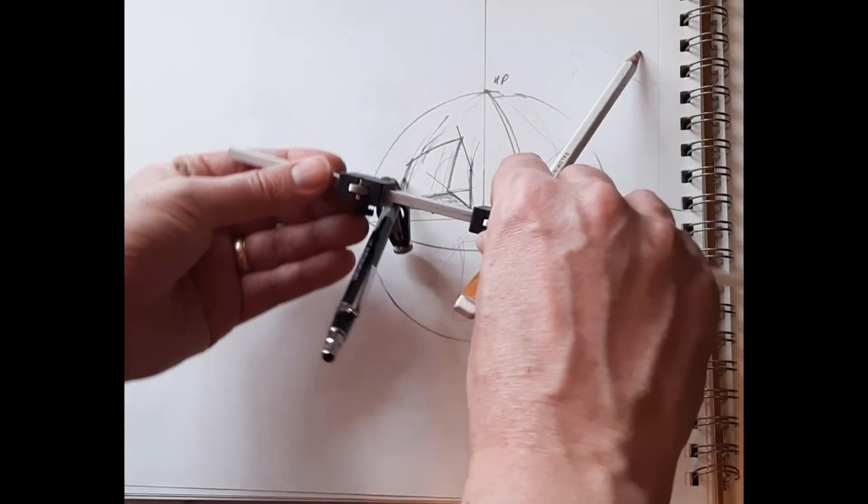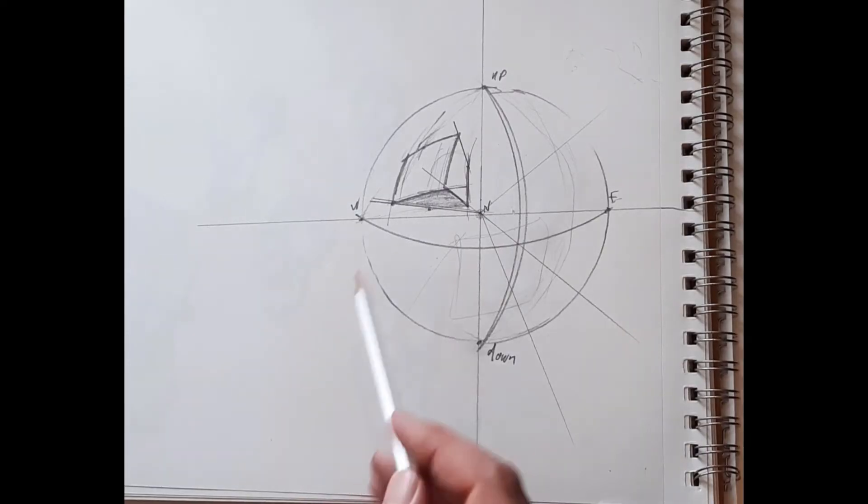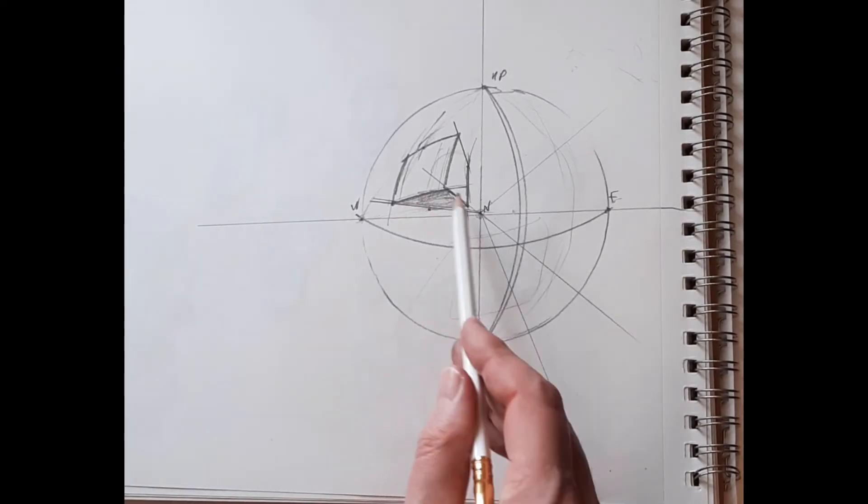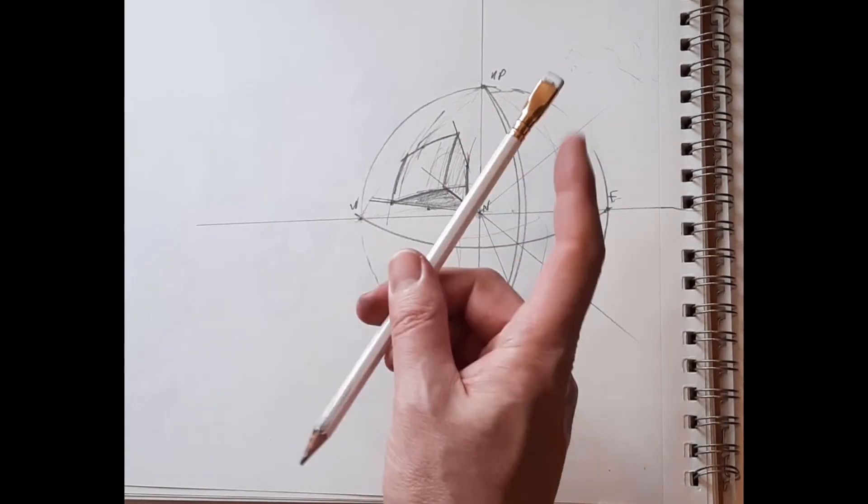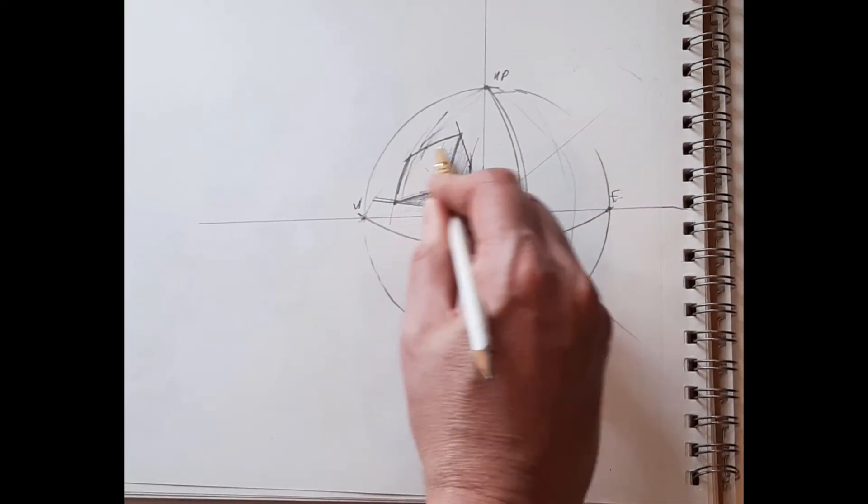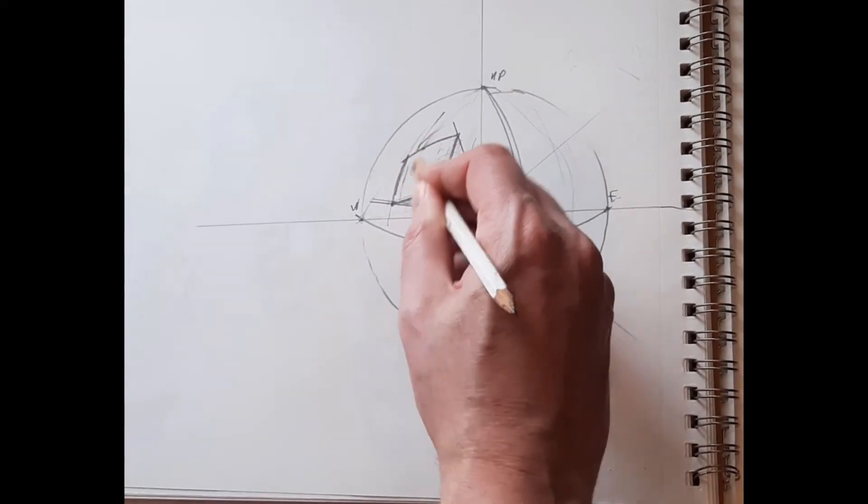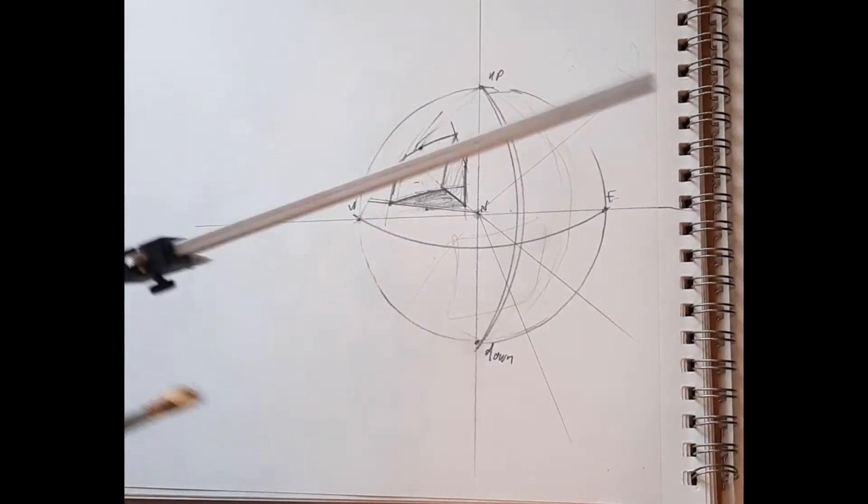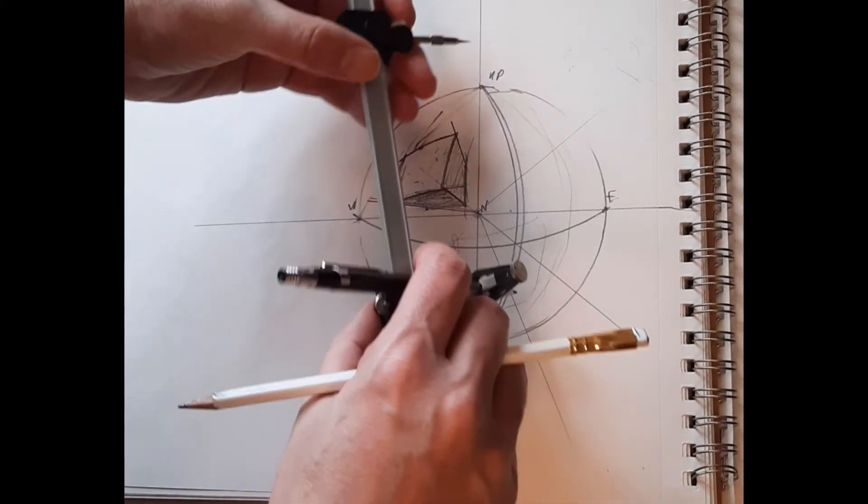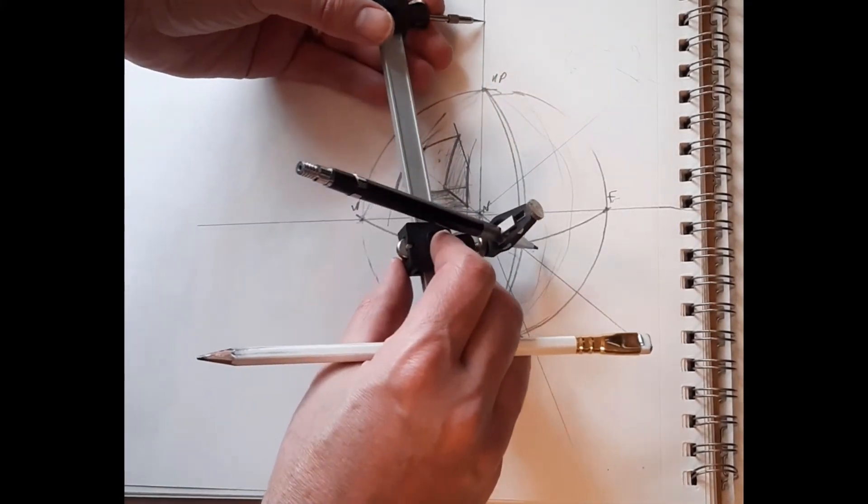There we go. Alright, so here's the bottom of my cube, the side of my cube, and the front face of my box rather, not cube.